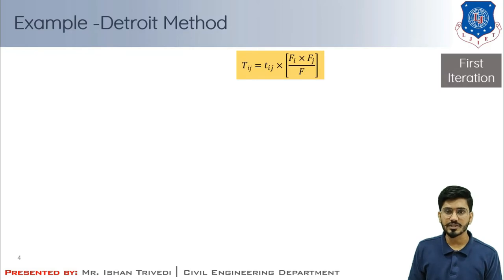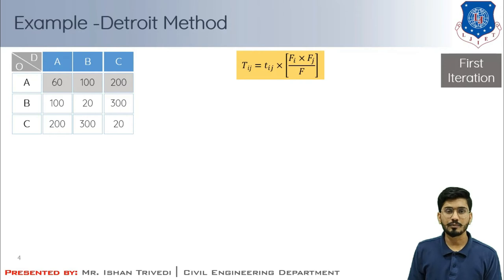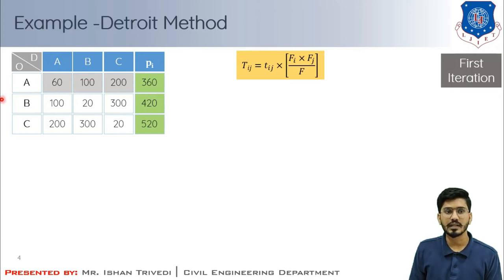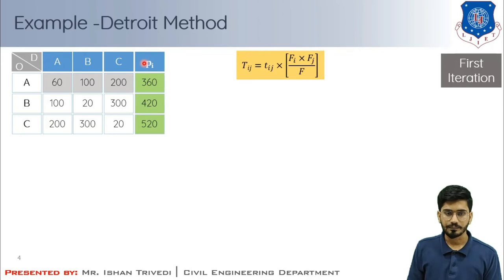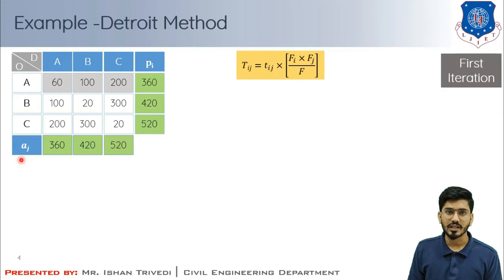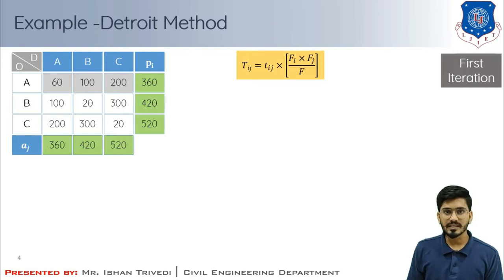In the first iteration, I plot all the given data with origin and destination for zones A, B, and C, and fill in the interzonal activity. I calculate the small pi value as the summation of all horizontal interzonal activity from A to A, A to B, and A to C. Similarly, the small aj value is the summation of all vertical interzonal activity representing present trip attractions. The total present trips sum to 1300, and the summation of both production and attraction is similarly 1300.